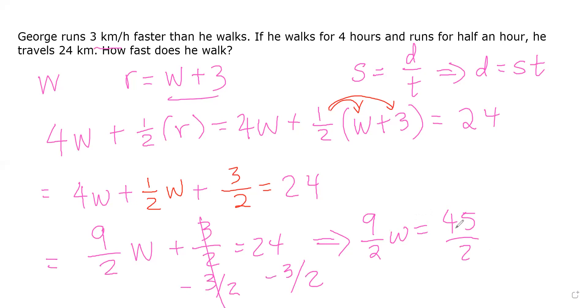There's the denominator two for both of them, so you can actually just multiply two on both sides. These guys cancel each other out, and you get that nine w is equal to 45.